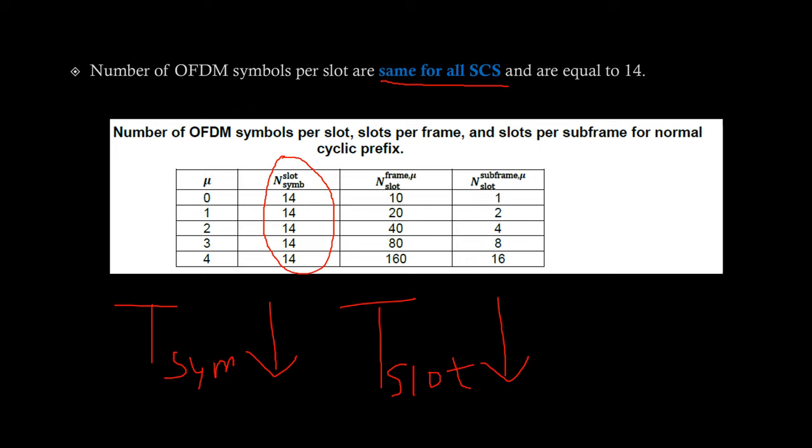So, that means a one subframe or frame can accommodate more number of slots as we go down this table. So, as we can see here that for 15 kHz subcarrier spacing the number of slots in a frame are 10 which are same for LTE and as we go down the table for other numerologies number of slots in a frame are increasing.